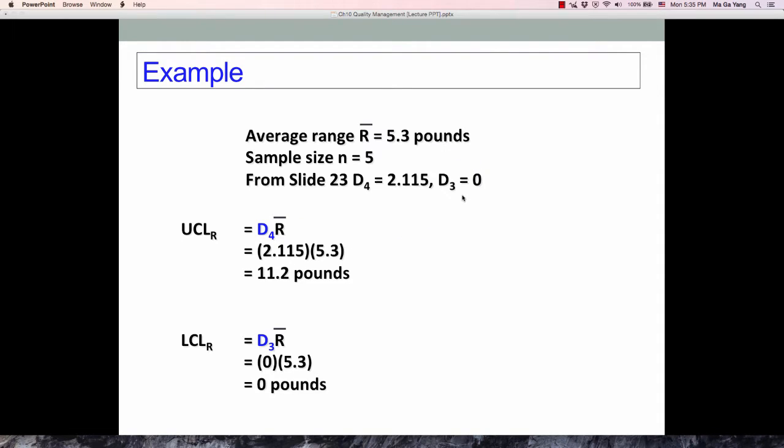In this case, the average range R-bar is 5.3 and sample size is 5. We find D₄ from the factor table based on sample size 5—D₄ is 2.115, D₃ is 0. The upper control limit for R chart is 11.2. The lower control limit for R chart is 0. The mean is the average range, which is 5.3.